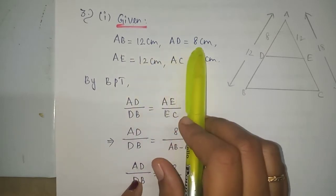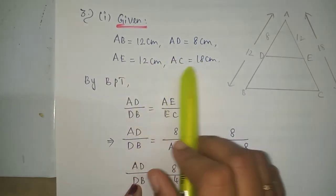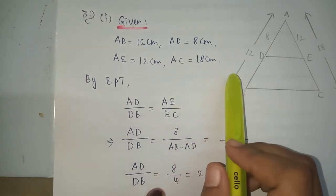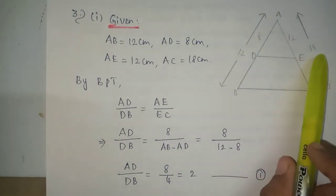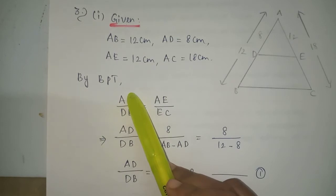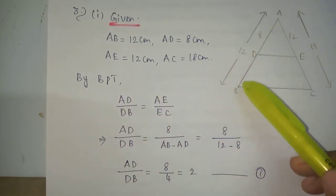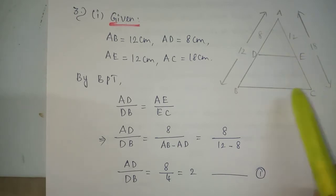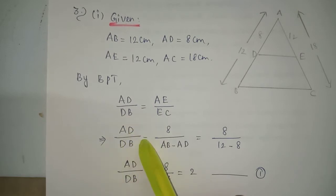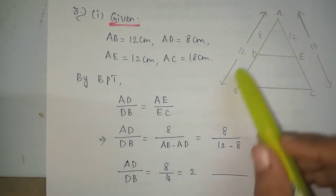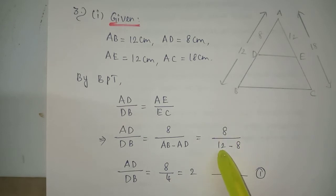Problem 3, first subdivision solution. Given AB is 12 cm, AD is 8 cm, AE is 12 cm and AC is 18 cm. By using basic proportionality theorem, we check if AD by DB equals AE by EC. AD by DB: AD is 8, and DB is AB minus AD which is 12 minus 8 equals 4. So AD by DB equals 8 by 4 equals 2.